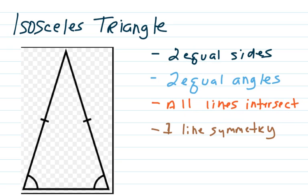All of the lines intersect and it has one line of symmetry. Those equal sides are marked here. I'm going to mark over those in black. Your equal angles are both here. So these two angles will have the same exact measurements. And again, we're going to do more with that once we start working with protractors.